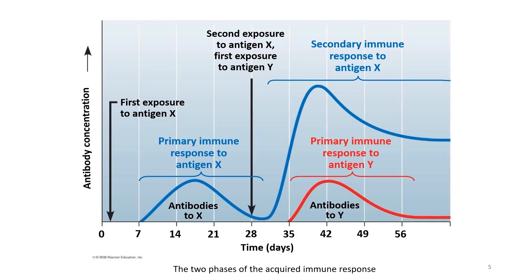This graph shows antibody concentration versus time during antibody-mediated immunity. The body is exposed to two antigens: antigen X and antigen Y. Antigen X first infects the body at day one. During this time, no antibody is produced initially. Primary immune response begins to kick in — antibody is first produced after seven days of infection, and antibody concentration reaches its peak around day 16 or 17. After reaching its peak, the antibody concentration decreases, showing that our body is winning as antibodies bind to antigens and label them for destruction.